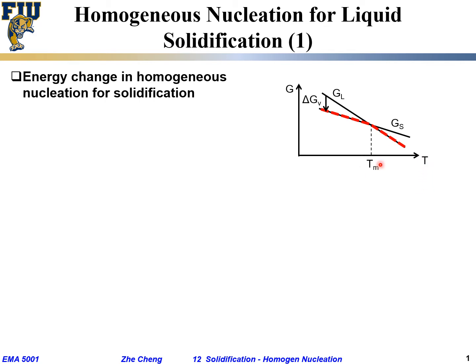To the right of Tm means higher than the melting point. Above the melting point, which phase is more stable — liquid or solid? Liquid. The more stable phase should have lower Gibbs free energy, so to the right side, the liquid Gl is actually lower.